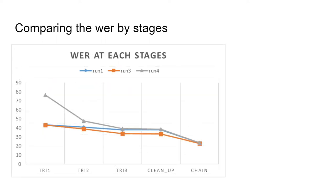We could also see that run 1 and run 4 have basically the same accuracy at the final stage, but in the middle stages they have some different values. We could also see that the cleanup process might have a great effect on accuracy, since run 1 does not have it in the ASL2. That's all we have done so far — thank you for watching.